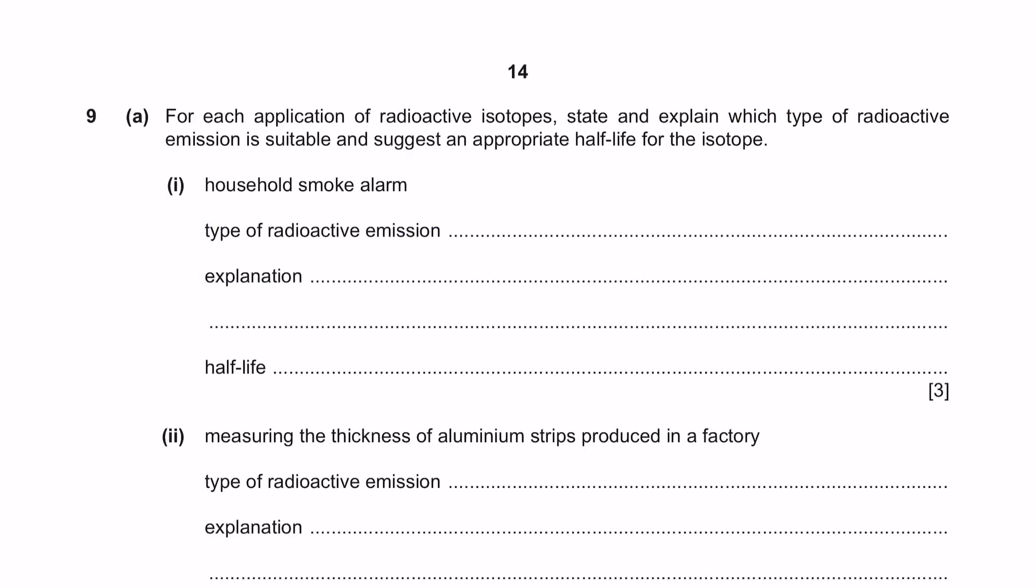Question 9, Part A. For each application of radioactive isotopes, state and explain which type of radioactive emissions is suitable and suggest an appropriate half-life for the isotope. Part 1, household smoke alarm. First of all, let's understand how a smoke alarm works. In a smoke alarm detector, in one end you will have the radioactive emission. On the other hand, you've got the sensor. As long as the sensor continuously receives the emission from the radioactive material, it will be fine. In case of fire taking place, there will be smoke. When the smoke blocks the emission reaching the sensor, that's when the alarm starts to ring.